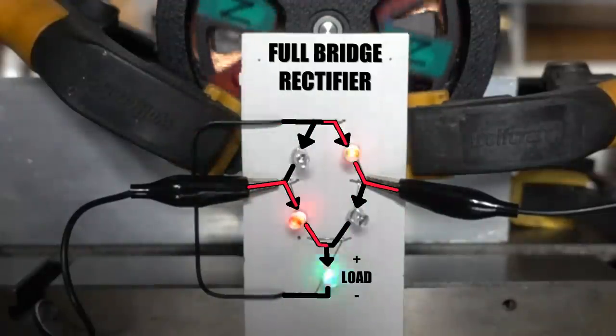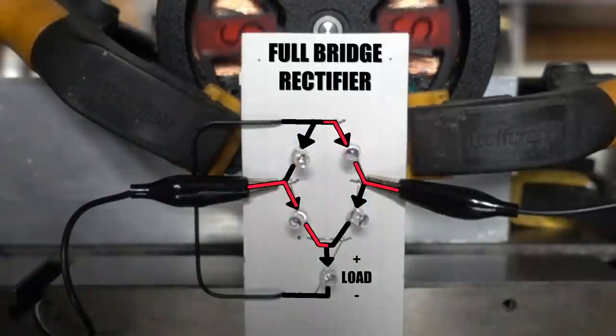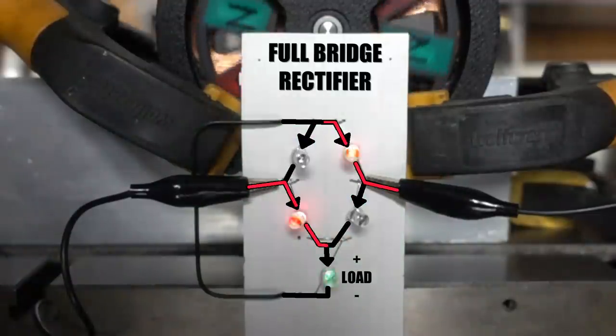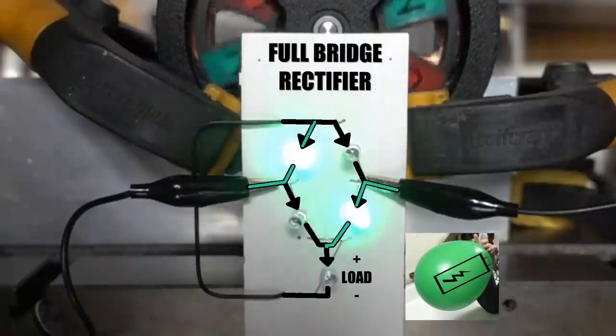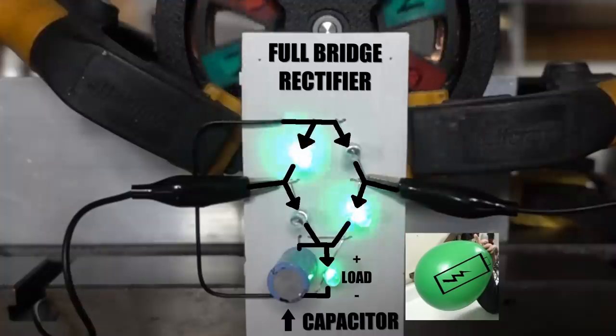But wait, wouldn't it be better if the load didn't pulse? Well remember that balloon we were blowing up? We need a balloon for the load in the form of a capacitor. That evens out the pulses to a nice steady green direct current.